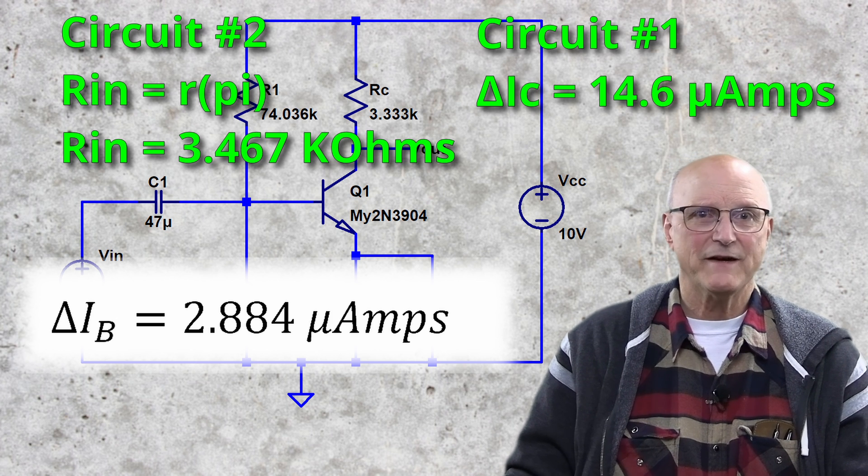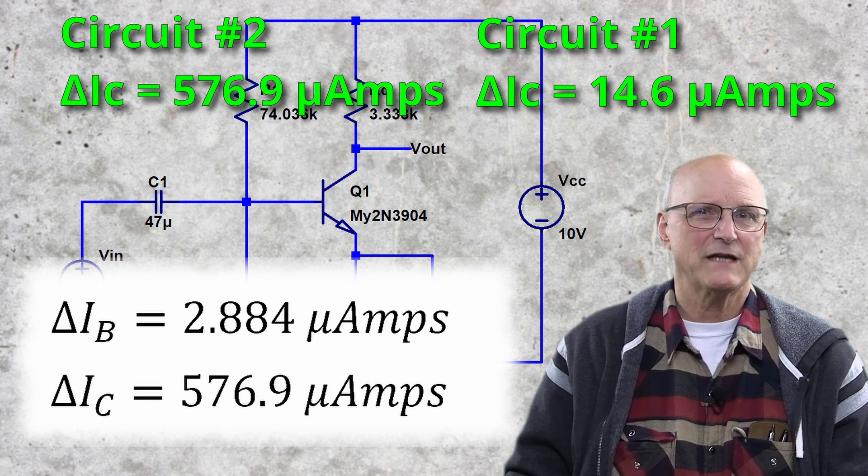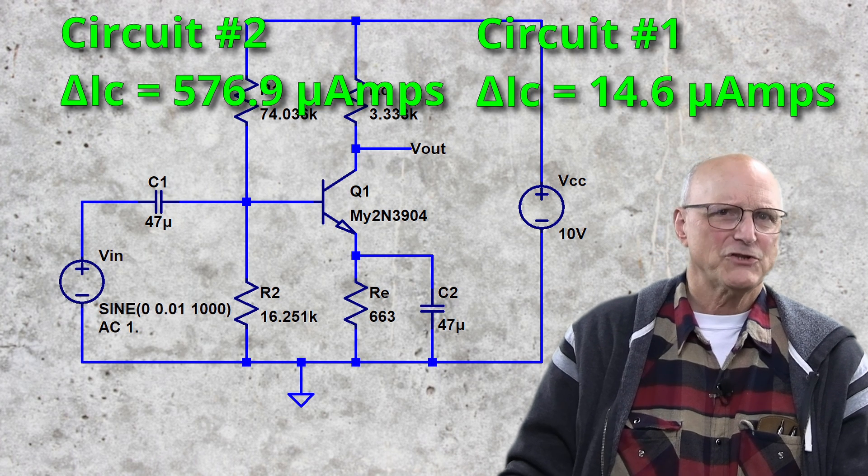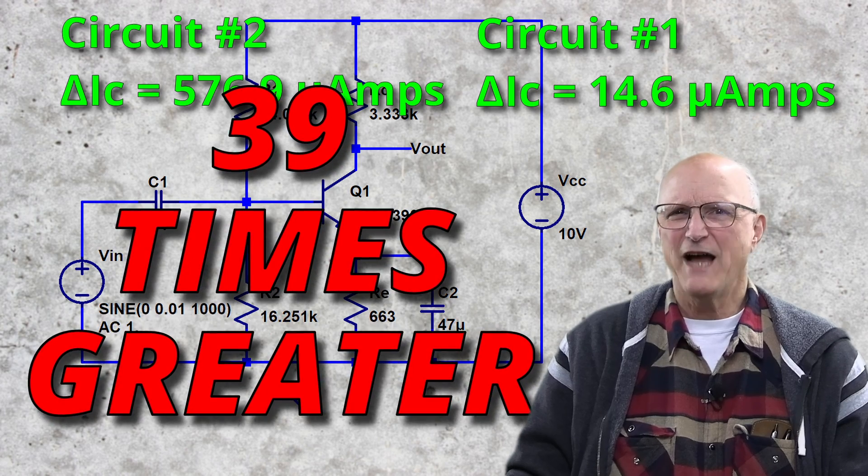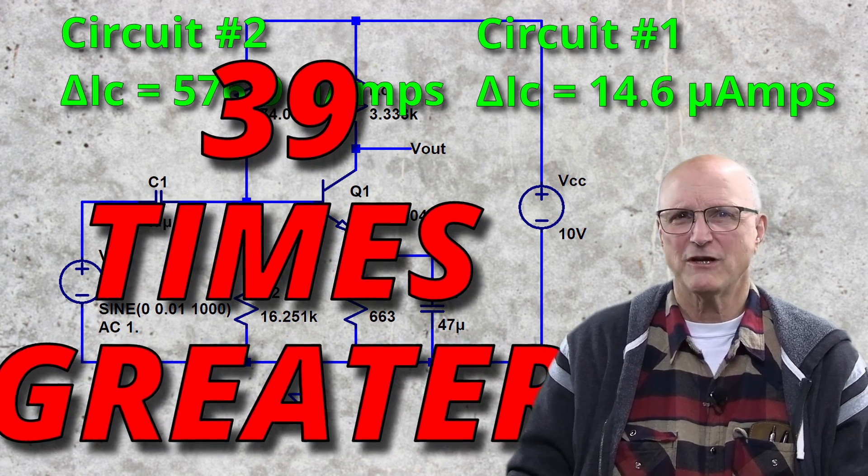This would give us a change in the collector current of 576.9 microamps. The change in collector current in the second circuit is 39 times that of the first circuit with the same change in input voltage.